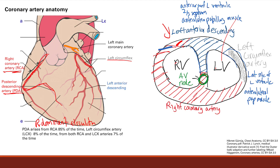It supplies the posterior side of the ventricles — the posterior two-thirds of the walls. It does the posterior one-third of the interventricular septum. And it supplies the AV node. The right coronary artery also supplies the SA node — the sinoatrial node — which is the first pacemaker area. The AV node is the second pacemaker area.